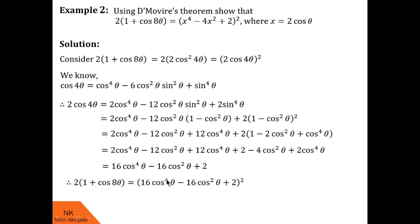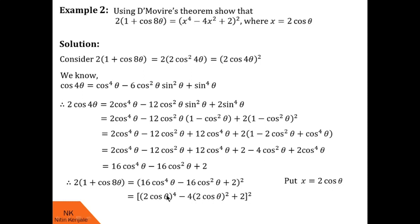Now we write 16cos⁴θ as (2cosθ)⁴, and 16cos²θ as 4·(2cosθ)². Now substituting x = 2cosθ, we get 2(1 + cos 8θ) = (x⁴ − 4x² + 2)² as required. Hence proved.